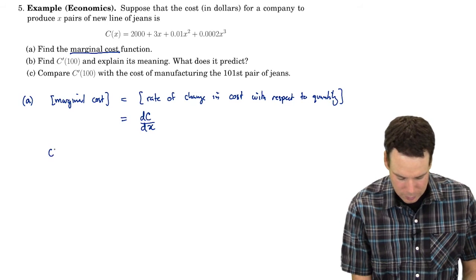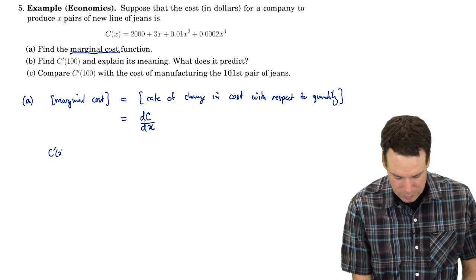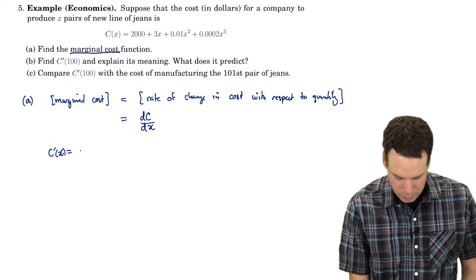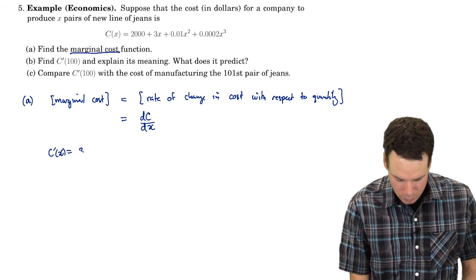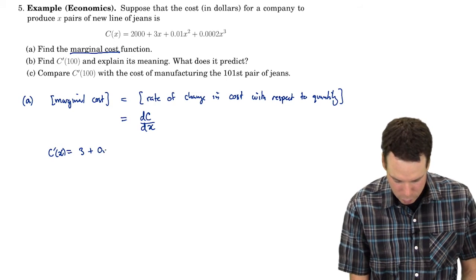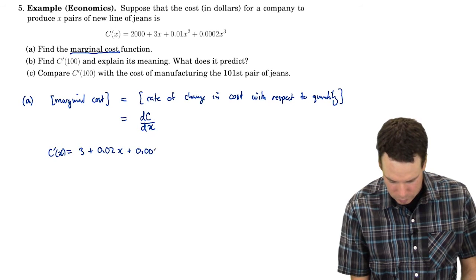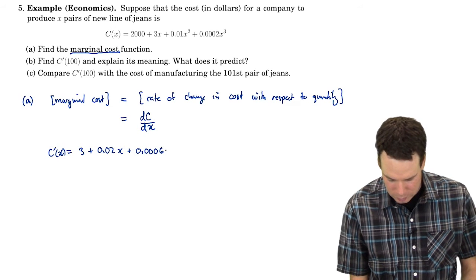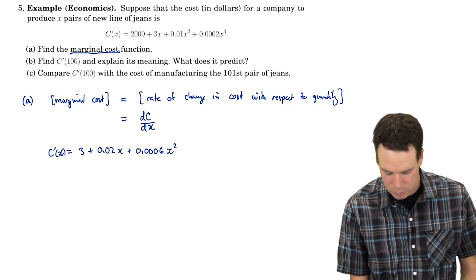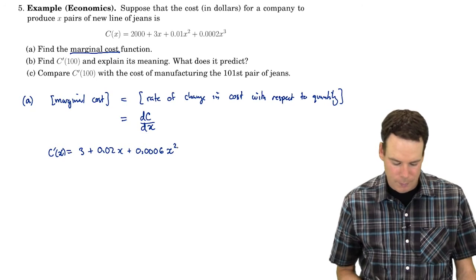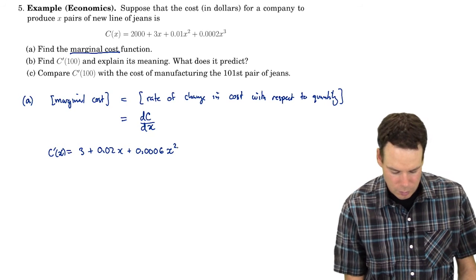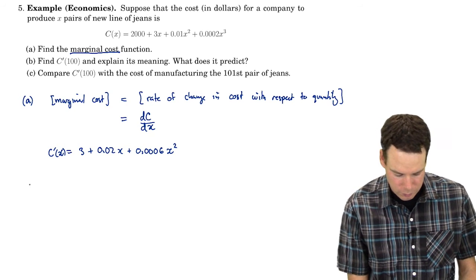So what is it in this case? Well, C prime of X is 3 plus 0.02X plus 0.0006X squared. So there's our marginal cost function.